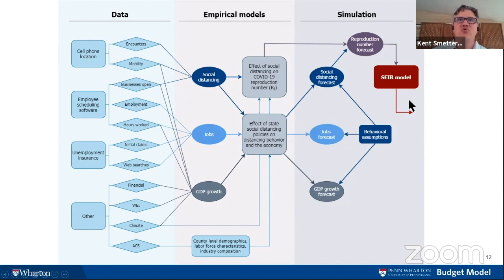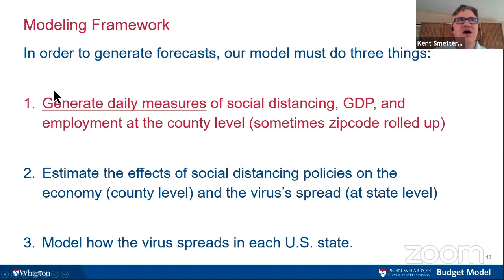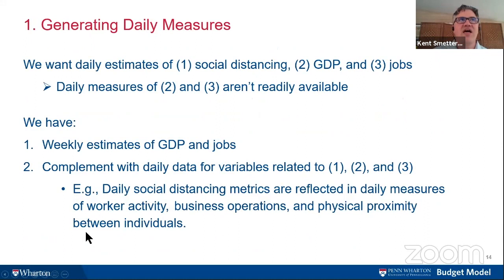Ultimately this feeds into the health model. This is why just running the health model by itself, you can't figure out how it corresponds to different policies, unless you have all of this in the background. We will be creating a white paper with all the differential equations and other technical details. Let me turn it over to Alex, who will talk about how we generate daily measures of social distancing and estimate social distancing policies at the county and state level. Then John will talk about virus spreading.